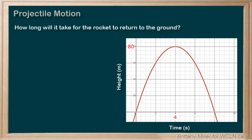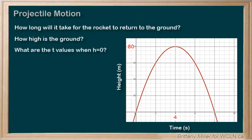To find out how long it takes for the rocket to reach the ground again, we first need to answer the question, well, how high is the ground? Well, in this case, it's going to be height 0. That's the x-axis. So, we're looking for the x-intercepts of the graph, or in this case, technically the t-intercepts.